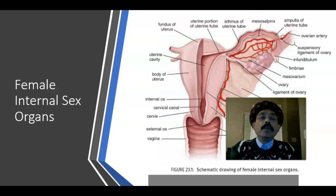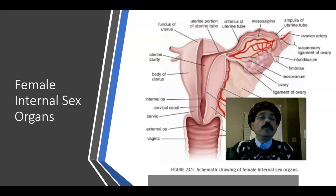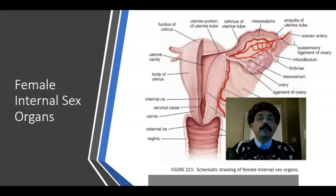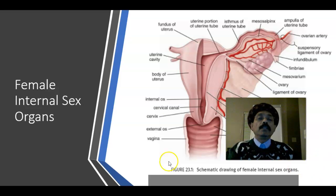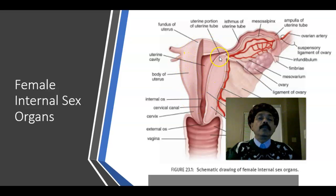Hello, my name is Dr. Diwan S. Raja. Today I will discuss the histology of the cervix of the uterus. Before going to the histology, we need to identify the female internal sex organs. Here is the image of the female internal sex organ — this is the uterus, fundus of the uterus, the body of the uterus, and this is the cervix of the uterus.